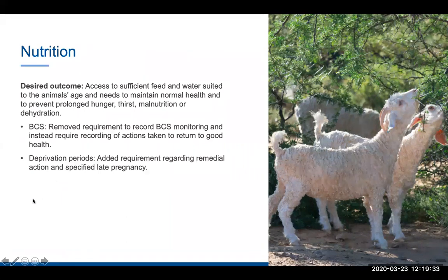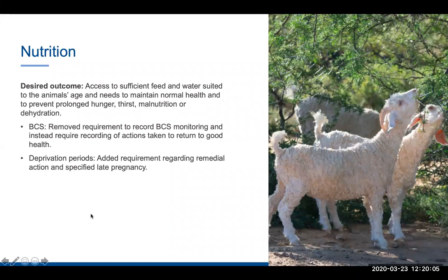Under nutrition, our key aim is access to sufficient food and water suited to the animal's age and needs, because during different phases of the farming year the requirements of an individual animal will vary to maintain normal health and prevent prolonged hunger, thirst, malnutrition or dehydration. One change: we've removed the requirement to keep records of body condition score monitoring. What we're really interested in is whether animals are being maintained in good health and welfare when it comes to nutrition — specifically what actions are taken when body condition score falls below acceptable levels to return animals to good health. It's moving away from record-keeping toward action.